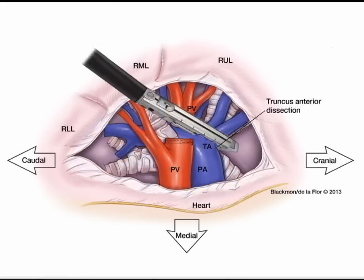For a video-assisted thoracoscopic right upper lobectomy, the second structure divided is the truncus anterior branch of the right upper lobe pulmonary artery. Once the pulmonary vein branches to the right upper lobe have been divided, this is the next vascular structure you should encounter. The truncus anterior branch should be dissected free and separate from the basilar branch. Be sure that you are only encircling the truncus anterior branches and not the main pulmonary artery, which would require a pneumonectomy.